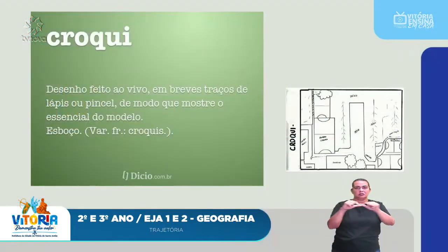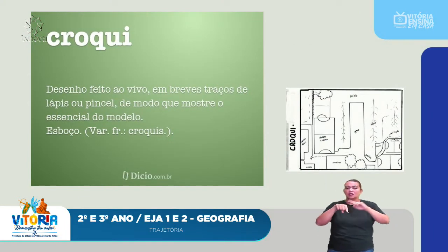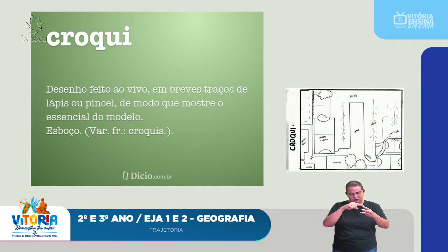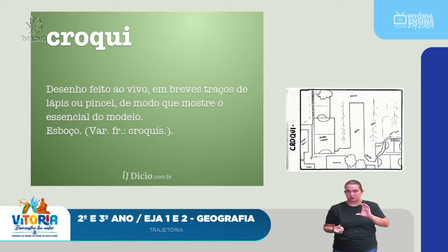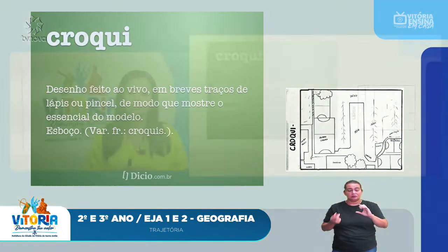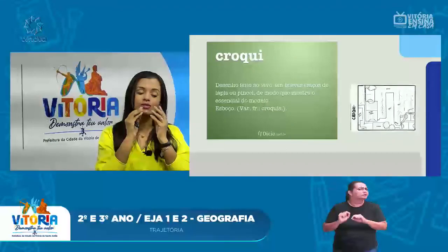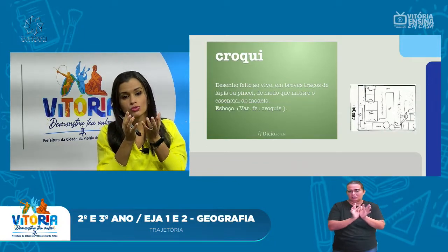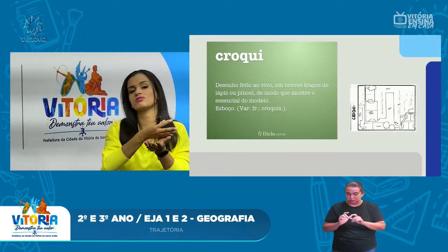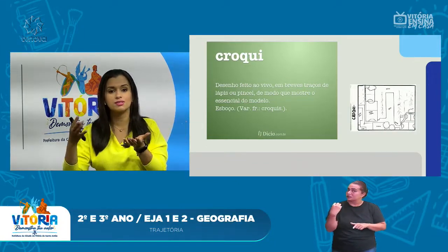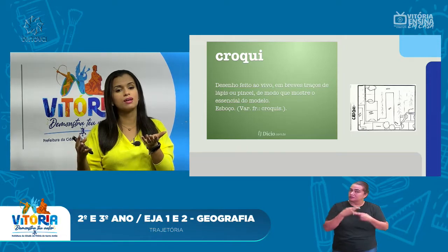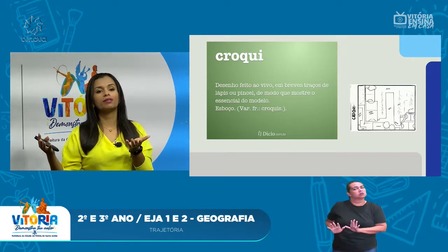After knowing how to properly define what ITINERÁRIO, ROTEIRO, and TRAJETO are, we have CROQUI. CROQUI — many people pronounce it different ways. CROQUI is a simple drawing, like a sketch of the place you will travel through or where you are, the space where you are. For example, I will make a CROQUI of my house.